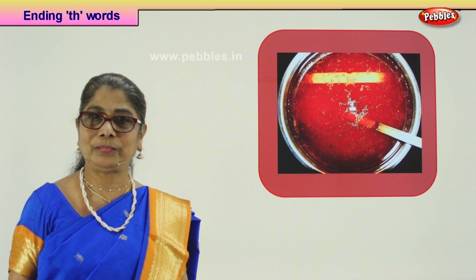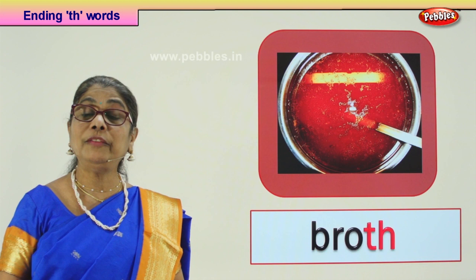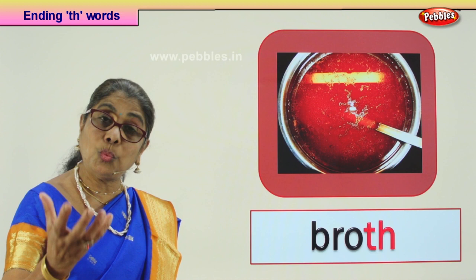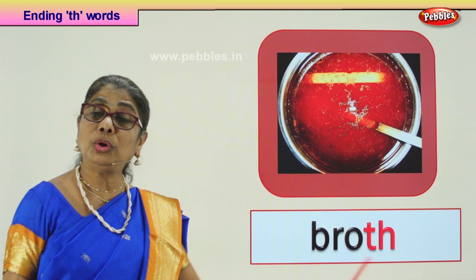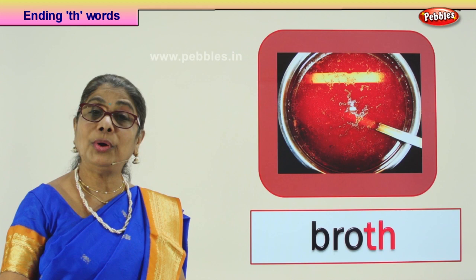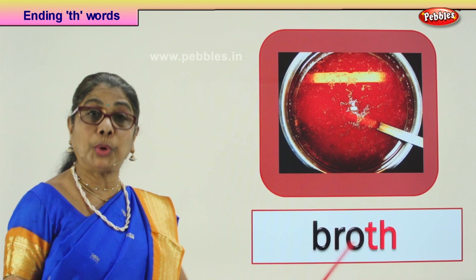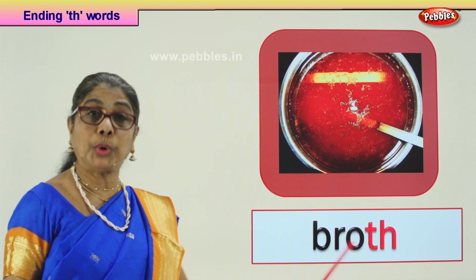Look what we have here. There is a bowl here and there is something inside. What is that? A soup — broth. You boil vegetables or chicken and take that water. You can use that water for cooking — it is called broth. It can be vegetable broth or chicken broth. The water from boiling vegetables or chicken is called broth, and it is used for making soup. What is this? Broth.